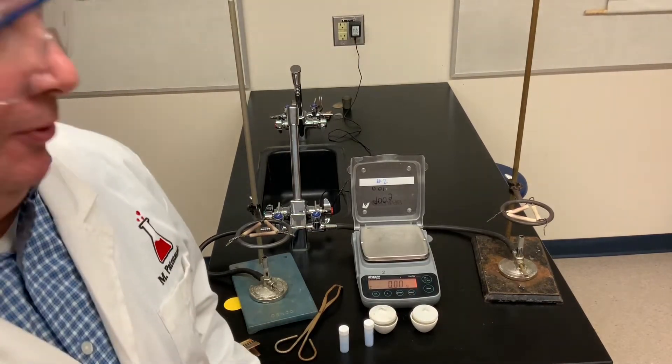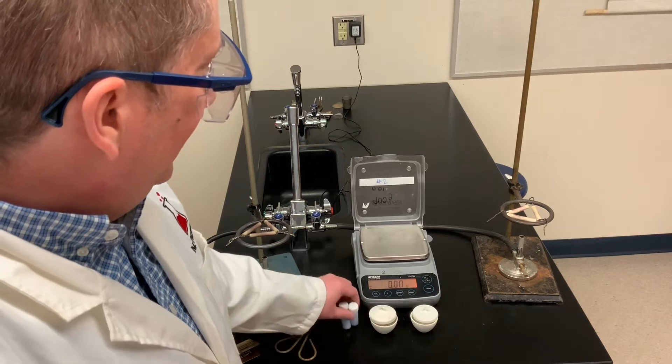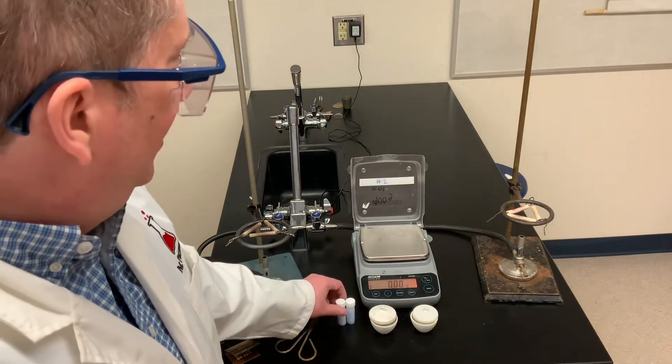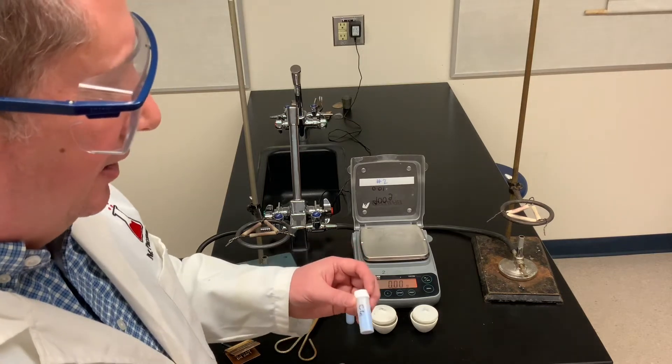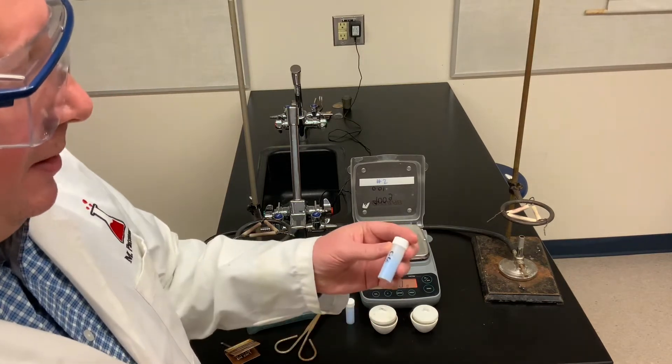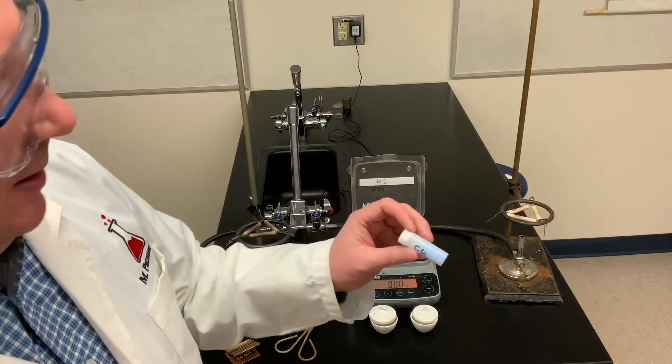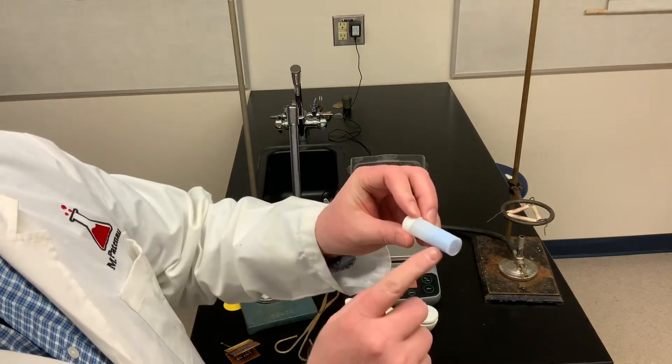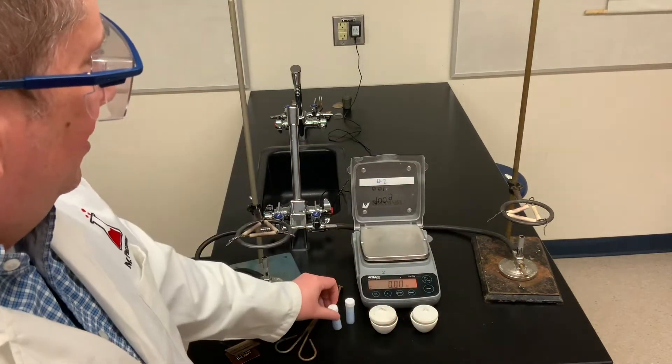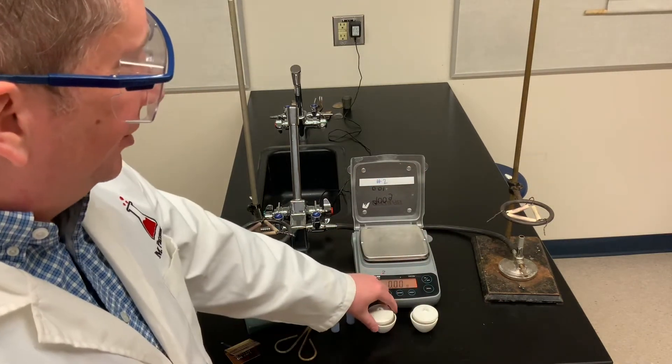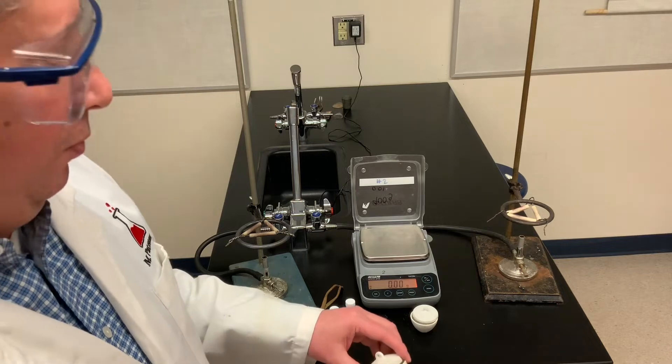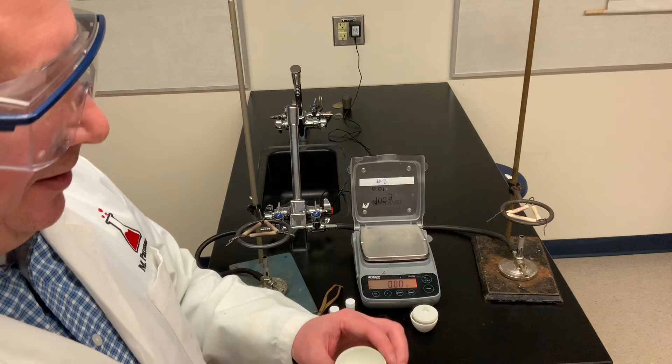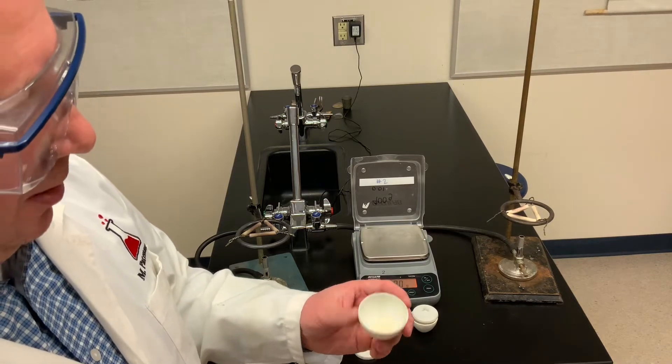Welcome to another laboratory video for chemistry. We're going to be determining the percentage of water in a hydrated ionic compound today. We're going to be using a pretty common hydrated salt of copper sulfate, copper 2 sulfate. It's a blue colored salt. We're going to be heating that salt to drive off the water of hydration that's in the salt crystals and we'll be left with anhydrous salt once the water is gone.